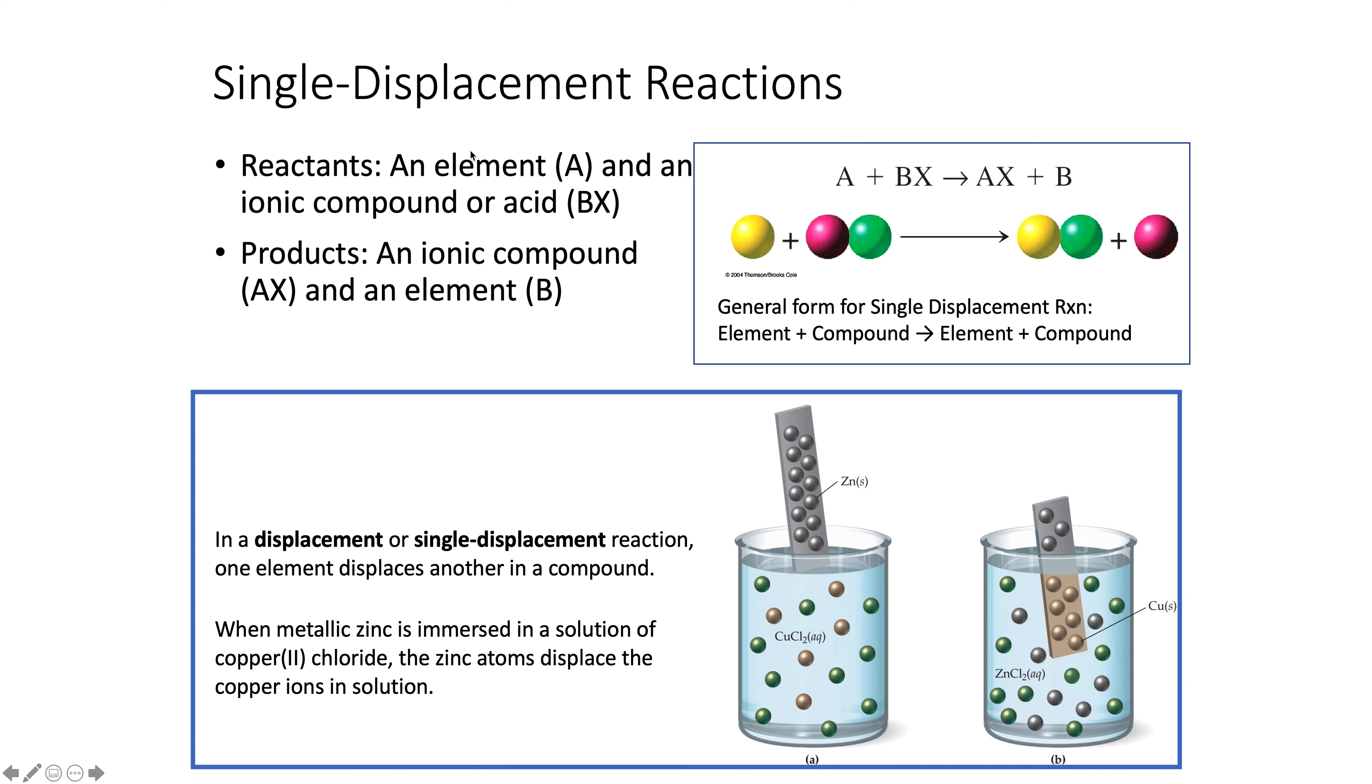Now we're going to do single replacement or single displacement. In this case, you have an uncombined element reacting with a compound. The general form is A plus BX makes AX plus B. I like to call this the king of the hill reaction. Someone has climbed up the hill and proclaimed themselves king.